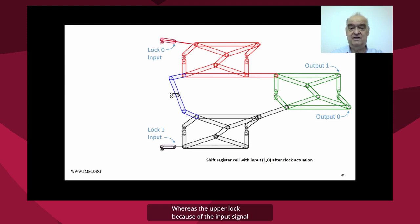that will force the balance to drive the lower lock. Because the lower lock is free to move, whereas the upper lock, because of the input signal, is prevented from moving.